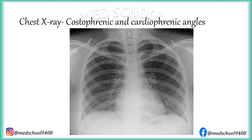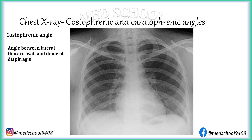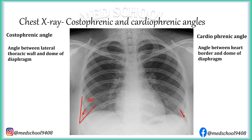The diaphragm forms two important landmarks on chest X-ray. First is the costophrenic angle, which is the angle between the lateral thoracic wall and the dome of the diaphragm — normally 30 degrees. The costophrenic angle is blunted in cases of pleural effusion and widened in cases of emphysema due to flattening of the dome of the diaphragm. The second landmark is the cardiophrenic angle, which is the angle between the heart border and the dome of the diaphragm. The cardiophrenic angle is blunted in moderate to severe pleural effusion and local mass lesions.